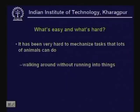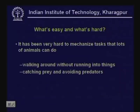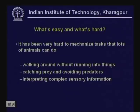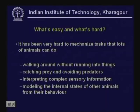However, there are certain things that humans and animals do quite effortlessly: walking around without running into things, catching prey and avoiding predators, interpreting complex sensory information, modeling the internal states of other animals — trying to understand what they are thinking and how to plan accordingly — and also working as a team or collaborating. These tasks have not all been easy to do by machines.